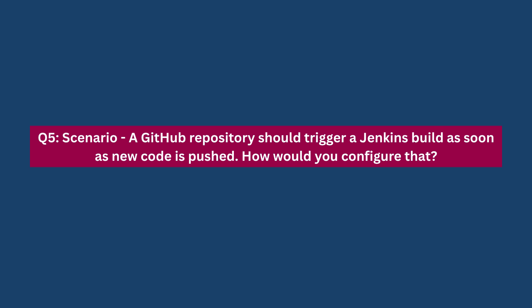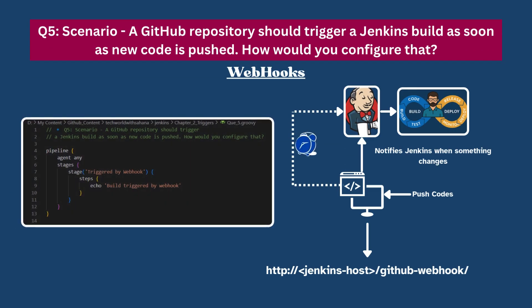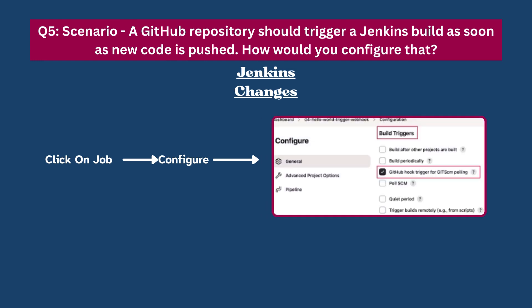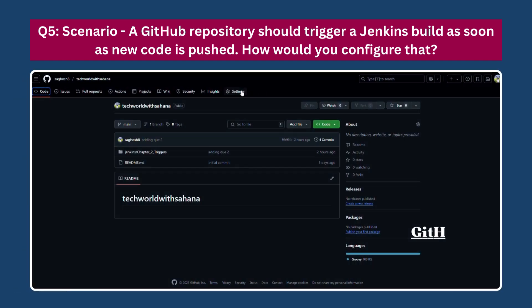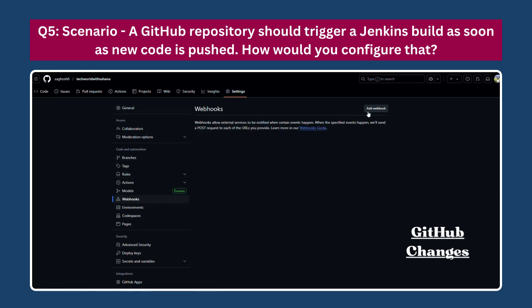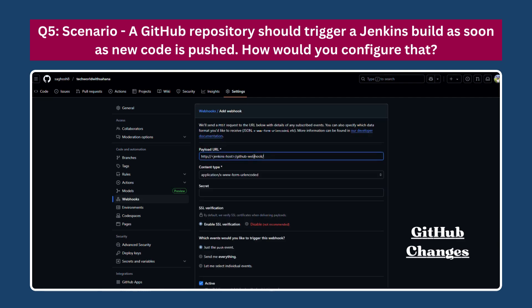Next scenario: A GitHub repository should trigger a Jenkins build as soon as new code is pushed — how would you configure that? In this scenario, we use a webhook to trigger the Jenkins job automatically whenever there's a change in the source code repository. Unlike scheduled triggers, webhooks do not require the trigger block. Instead, changes are required in both Jenkins and GitHub. First, go to Jenkins, go to that particular job, click Configure, then check the box beside 'GitHub hook trigger for GITScm polling'. Then in GitHub, go to repository settings, Webhooks, add the webhook, provide the payload URL, and set the content type.